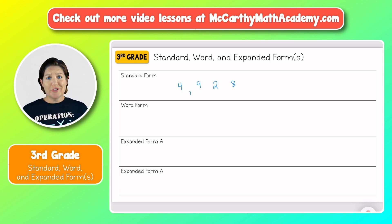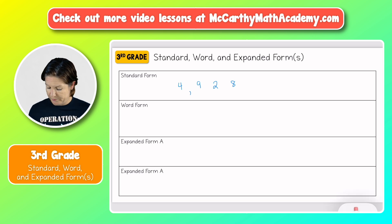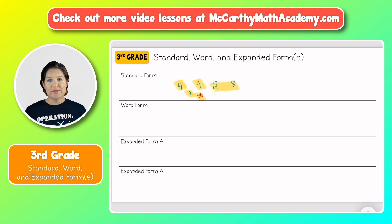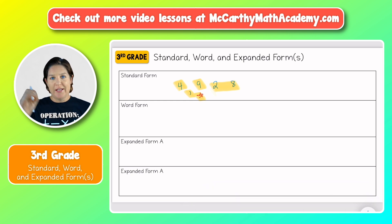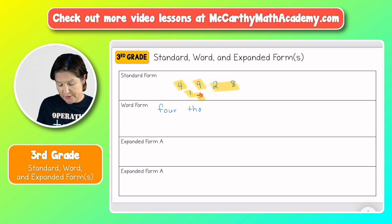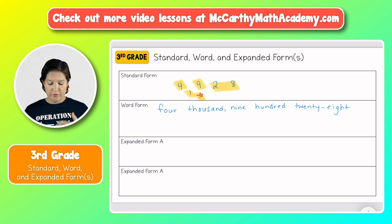Now for word form, I always tell students that if you can read this number, you can write this number in word form. If you can read it, you can write it. So let's practice reading the standard form to help us write the word form. The 9 is in the hundreds place, so we need to remember to say the name 'hundreds.' To read this, we would say 4,928. And if you need help reading numbers, I have another video on that. So we just read the number in standard form — let's write it in word form: four thousand, nine hundred twenty-eight. That is how you write a number in word form.